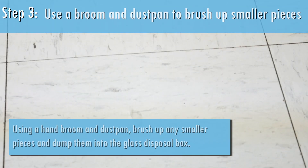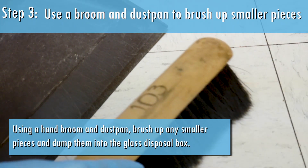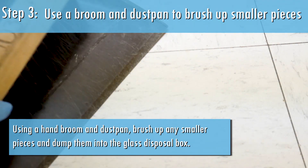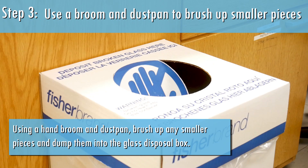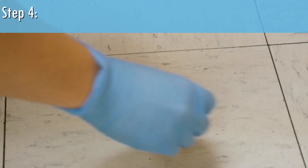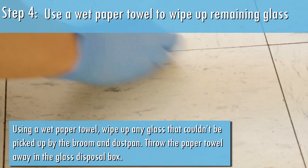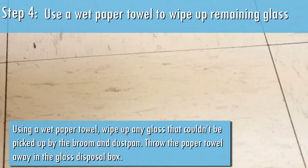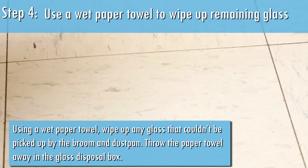Step 3: Using the hand broom and dustpan, brush up any smaller pieces and dump them into the glass disposal box. Step 4: Using a wet paper towel, wipe away any glass that couldn't be picked up by the broom and dustpan.